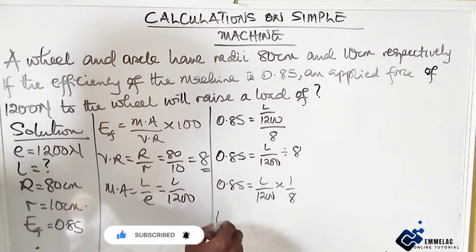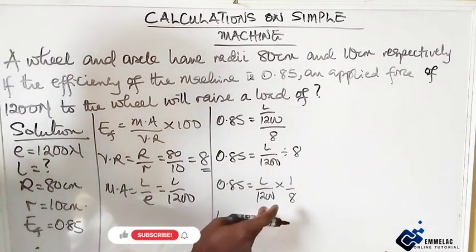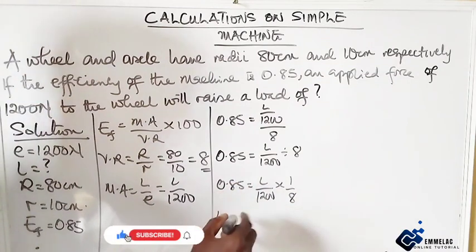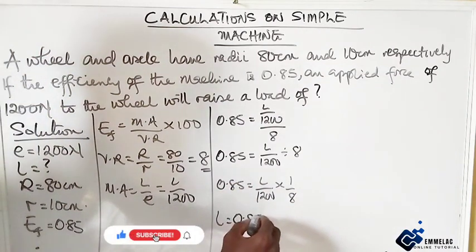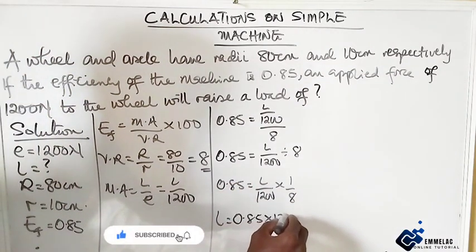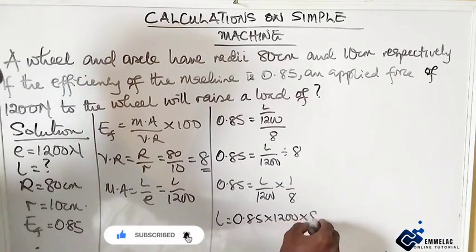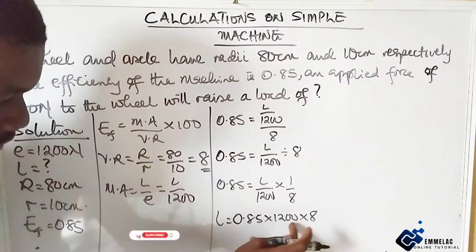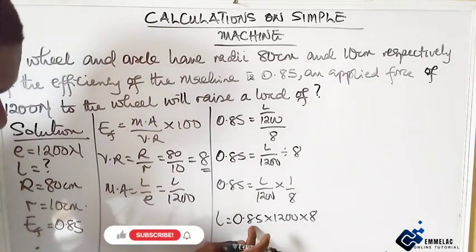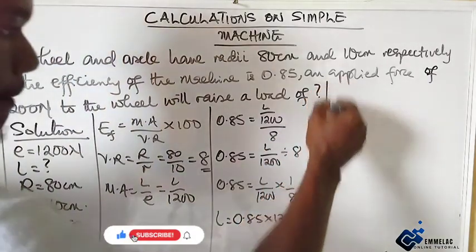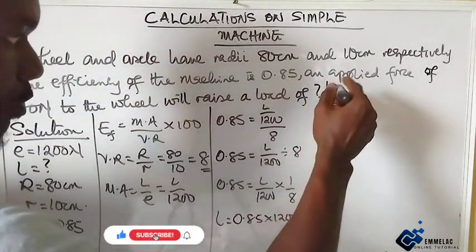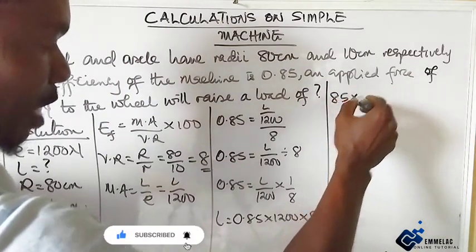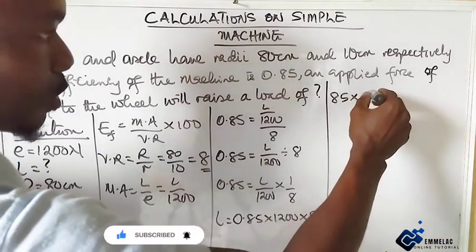Invariably, our load will be all these cross multiplying, so 0.85 times 1200 times 8. Or if we eliminate these two zeros here, this will give us 85 times 12 times 8.